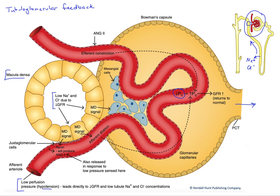That low sodium and chloride is going to generate a macula densa signal telling the afferent arteriole smooth muscle to dilate. That dilation will allow the upstream pressure to travel more downstream, enhancing the downstream pressure, bringing PC up and bringing GFR back up — helping to auto-regulate GFR through this tubuloglomerular feedback mechanism.